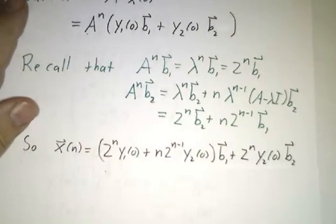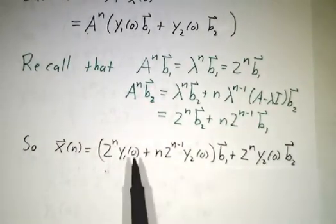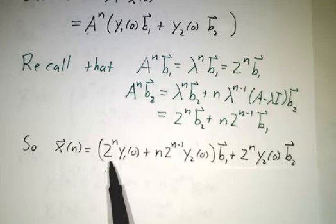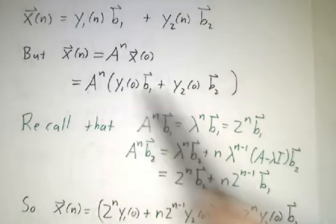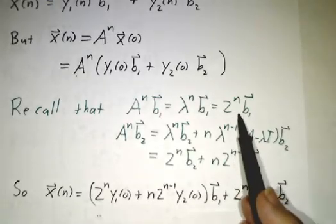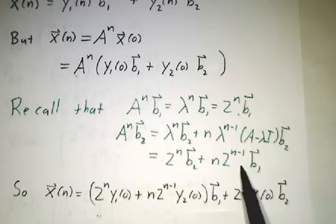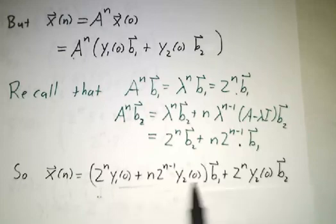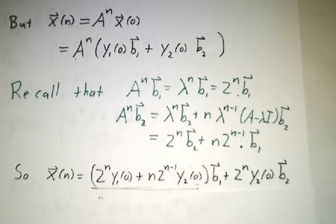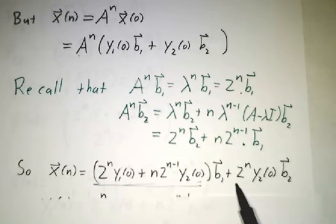So we can write down what x at time n is. It's y1 of 0 times this, plus y2 of 0 times this. And if you collect all the b1 terms, they're over here. You collect all the b2 terms, that's just going to be over there.